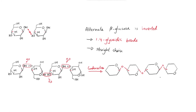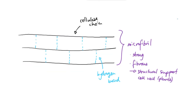Similar to amylose in starch with alpha-glucose, having 1-4 glycosidic bonds means the chain forms a straight chain. Each cellulose molecule forms a straight chain, and in the cellulose found in plant cell walls, these cellulose chains join together to form microfibrils. This diagram shows how the cellulose chains are joined together with hydrogen bonds. Even though individual hydrogen bonds are very weak, when there are many of them together they become quite strong, making the microfibril a strong fibrous structure that provides structural support.